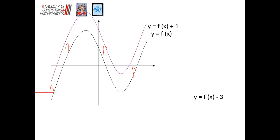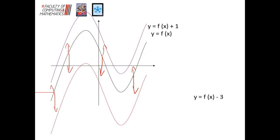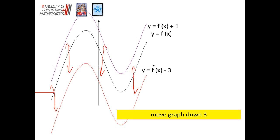If we do f of x minus 3, you've got the same thing, but all these points, instead of moving up, they're going to move down three places. So you've got exactly the same graph but moved down three places. You can see that if you've got a number at the end, that is a vertical movement. So f of x plus a is working up and down the way — outside the bracket — and it would be the way you expect: a positive number goes up, a negative number goes down.